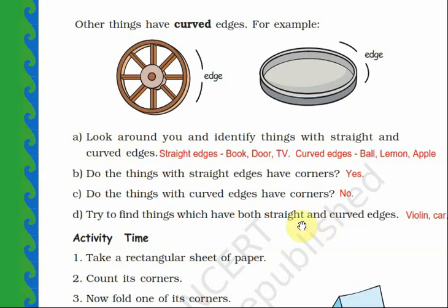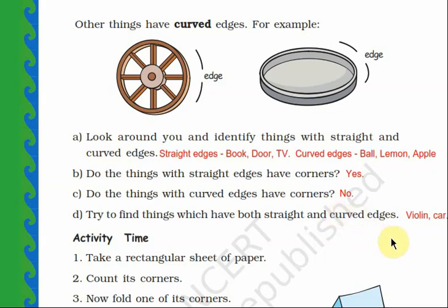Try to find things which have both straight and curved edges. For example, a violin has both curved and straight edges. A car also has curved as well as straight edges — the top of the car is a little curved, the portion near the wheel is also curved, while the below side of the car is straight. Find out more things which have both curved and straight edges.